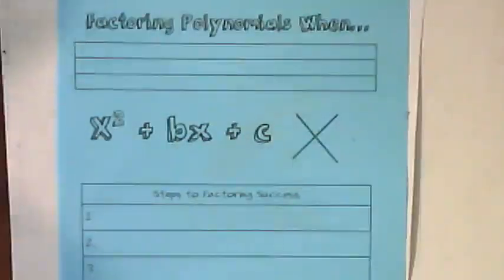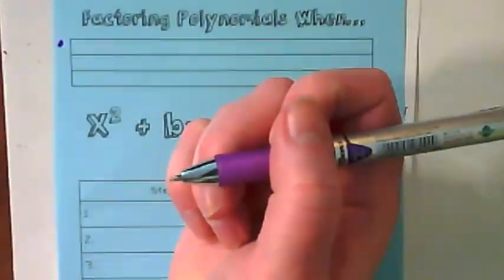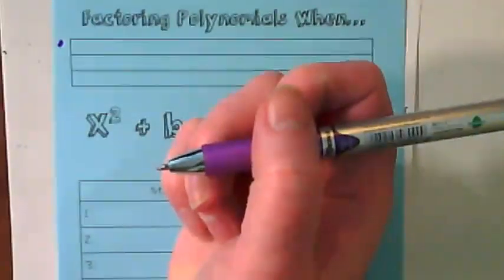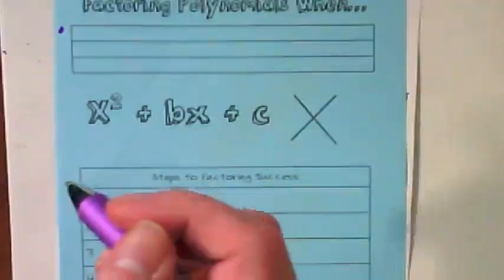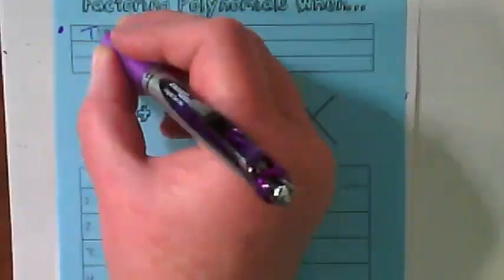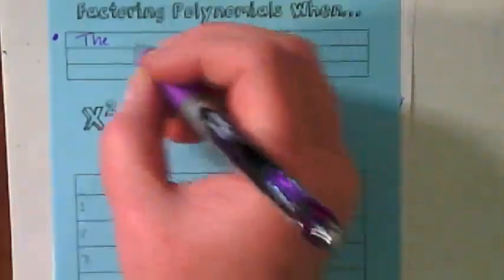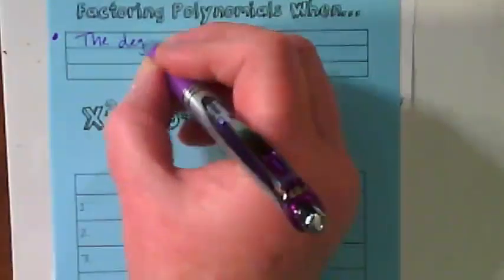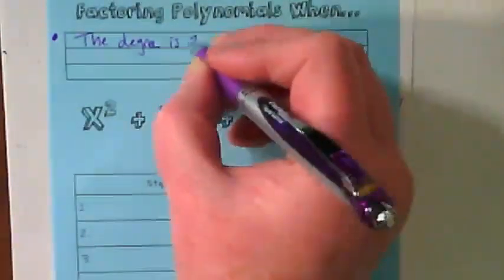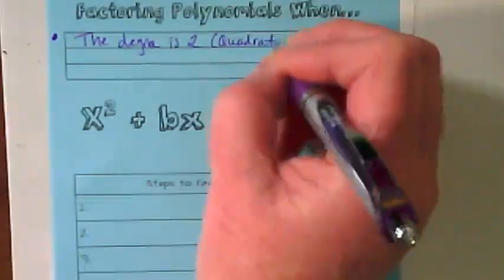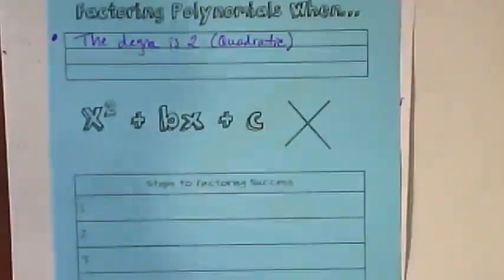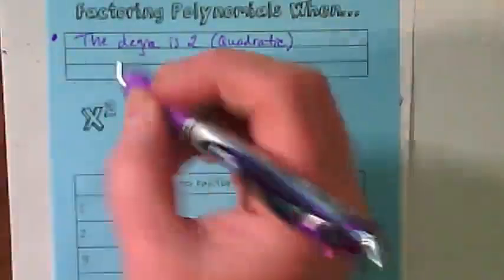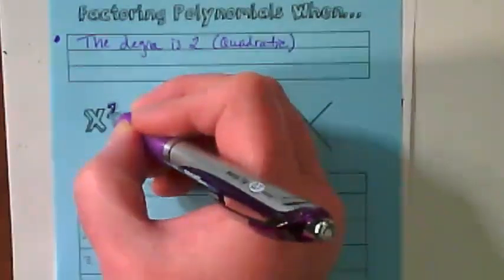Alright, factoring polynomials when there are three conditions that determine when we use this direction set to factor. On Thursday we will get a new one that has a different set of criteria. First, today, we're looking at—we factor quadratics or polynomials this way when the degree is two, meaning it is a quadratic. Here is my degree of two that makes this something we're going to be able to do.